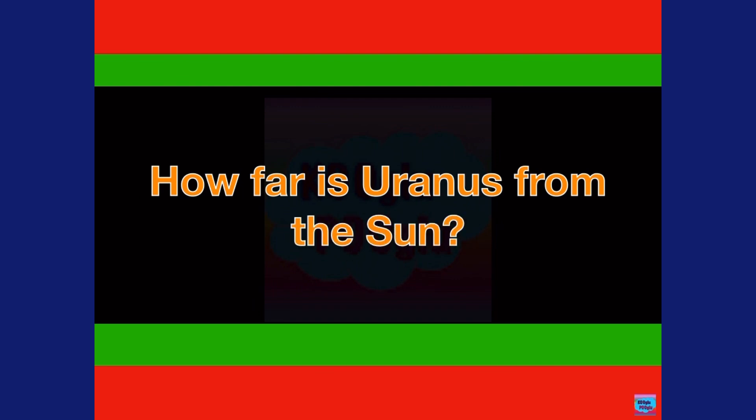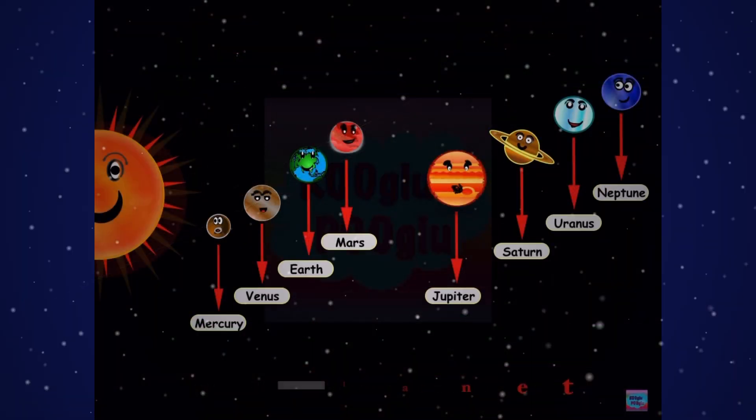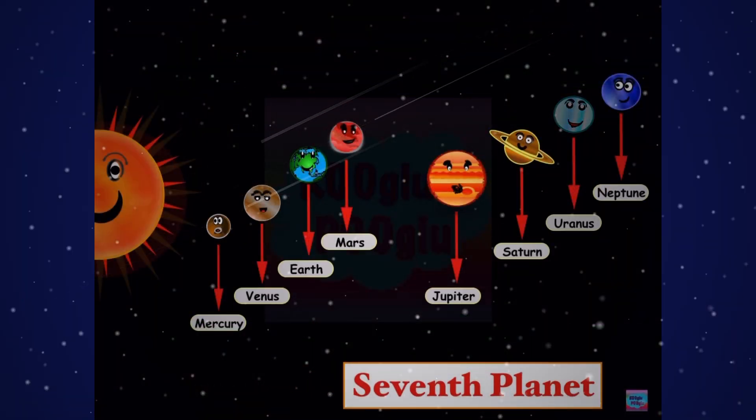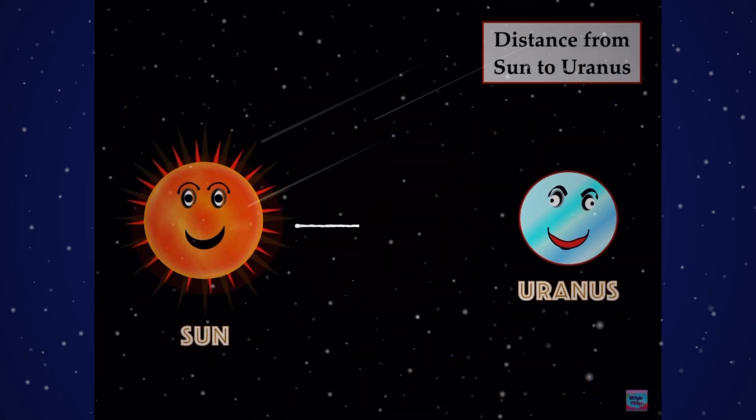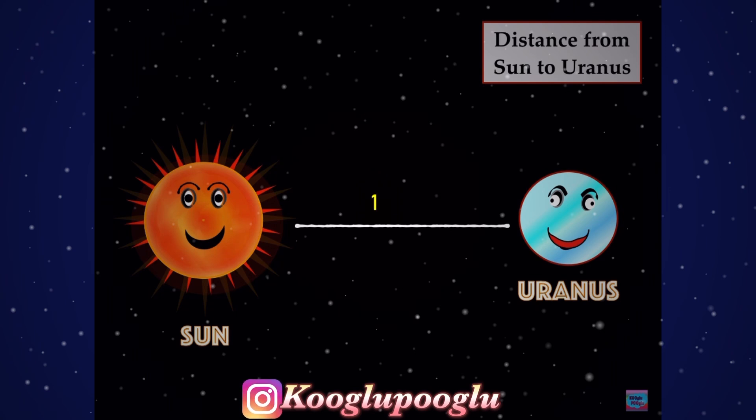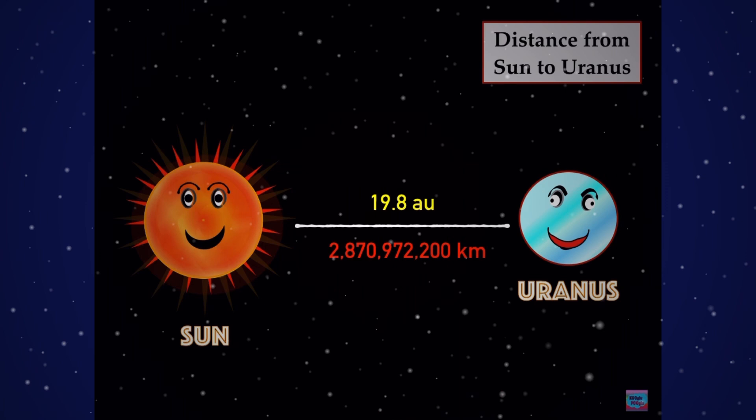How far is Uranus from the Sun? It's the seventh planet from the Sun. The distance from Sun to Uranus is 19.8 AU, and AU stands for astronomical unit.